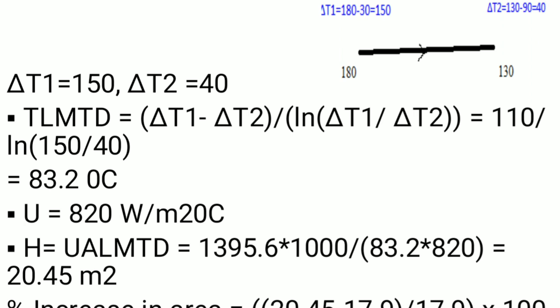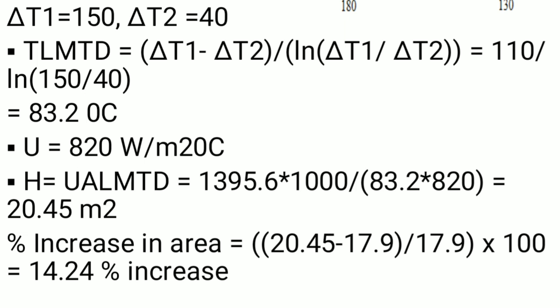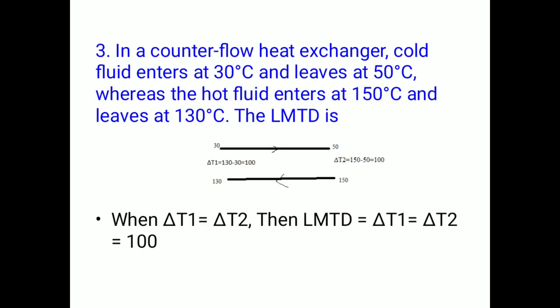With parallel flow LMTD = 83.2°C and the same Q and U, the required area is 20.45 m². The percentage increase in area = (20.45 − 17.9) / 17.9 × 100 = 14.24%. This shows that counter-flow exchangers require less area than parallel-flow for the same duty.